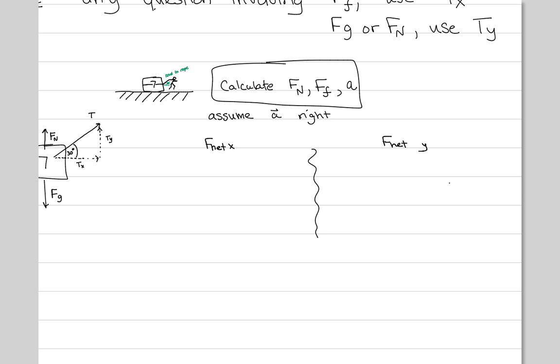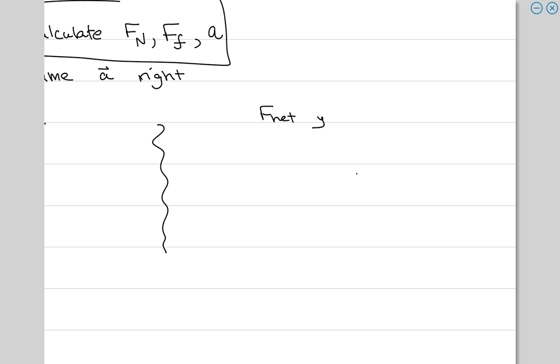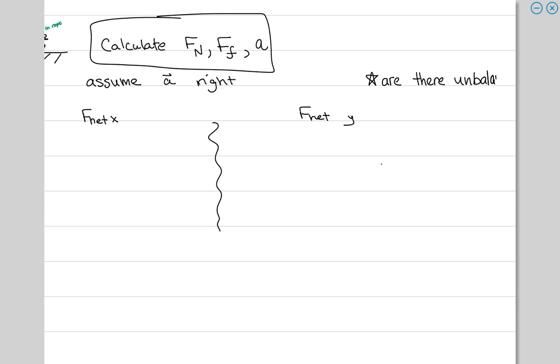So give yourself basically a couple columns. We want to do F net X and we want to do F net Y. We have to basically break down this problem into the two components. Now let's start with F net Y. It's a little bit easier. And remember, you always have to ask yourself, are there unbalanced forces? This is a question you need to ask yourself in general, always. Are there unbalanced forces?